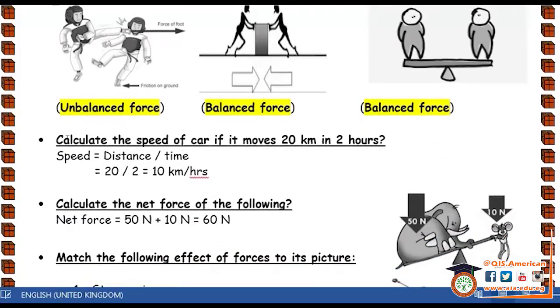Question number two: Calculate the speed of a car if it moves 20 kilometers in 2 hours. First, speed equals distance divided by time. Where the distance here is 20 kilometers and where the time here is 2 hours. So, the distance will be 20 divided by 2. The answer will be 10 and the unit of measuring speed is kilometers per hour.